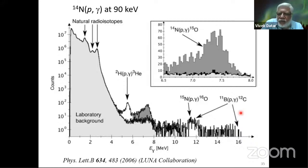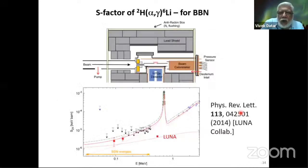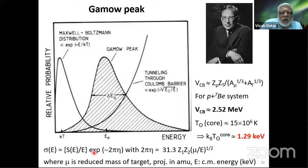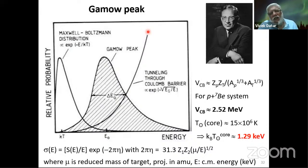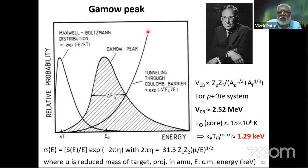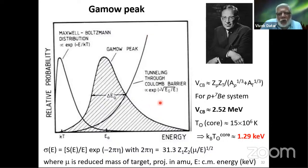The S-factor is physically just another representation of the cross-section. You can compute the cross-section from the S-factor using the known energy, reduced mass, and charges. Because of tunneling, the cross-section goes down exponentially, requiring a semi-log or log-log plot. The S-factor basically linearizes the cross-section — for visualization this is much easier, and you can see resonances if they exist, since they will show up in the S-factor. There is a one-to-one correspondence between the cross-section and the S-factor.